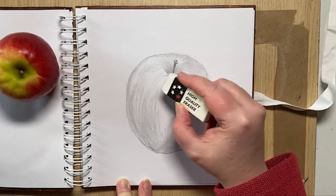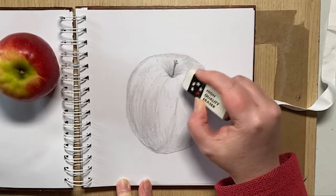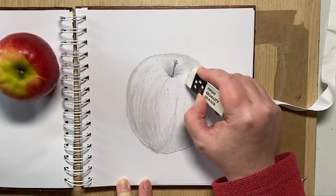And you can use your rubber to take out some of the smudging, just to give a bit more highlighting.